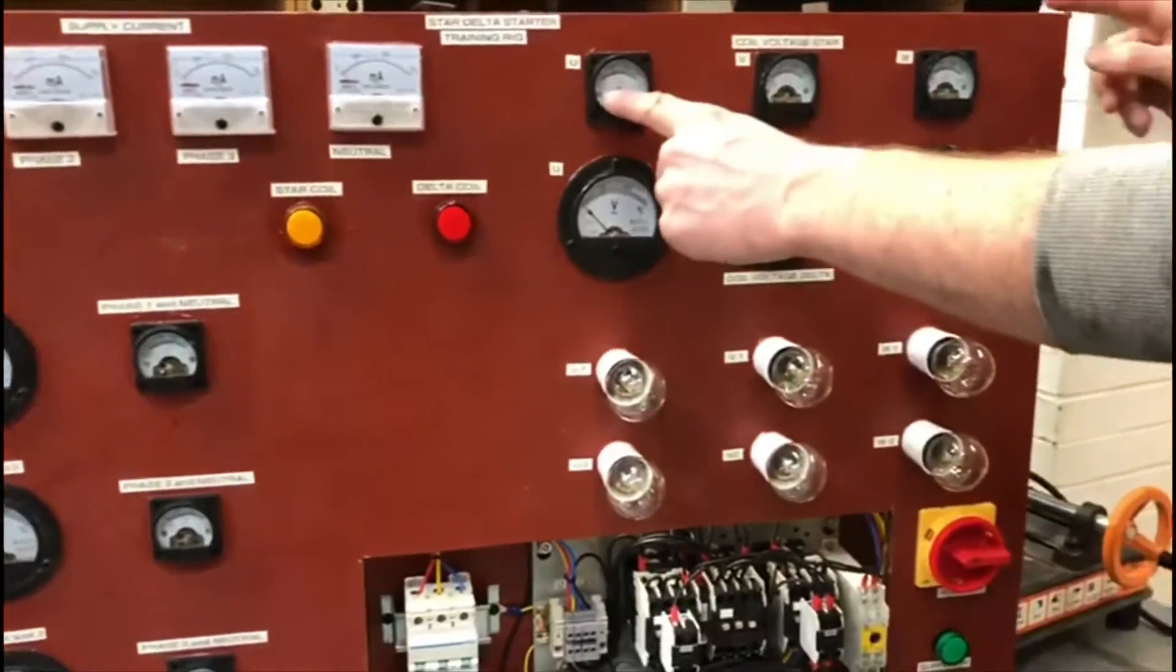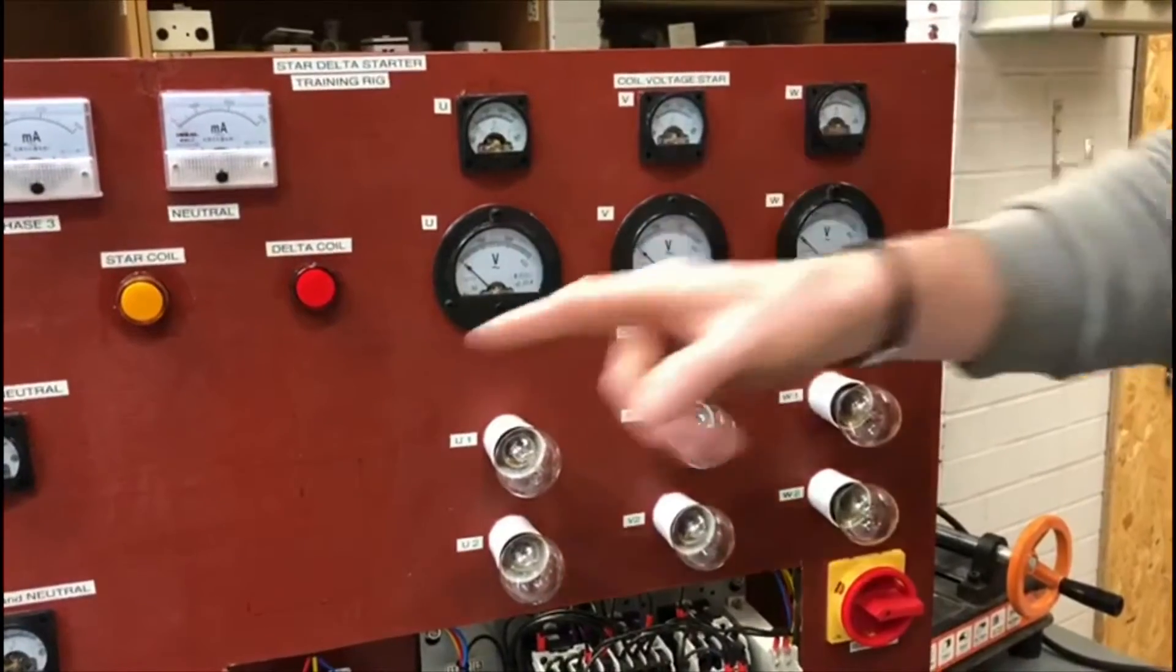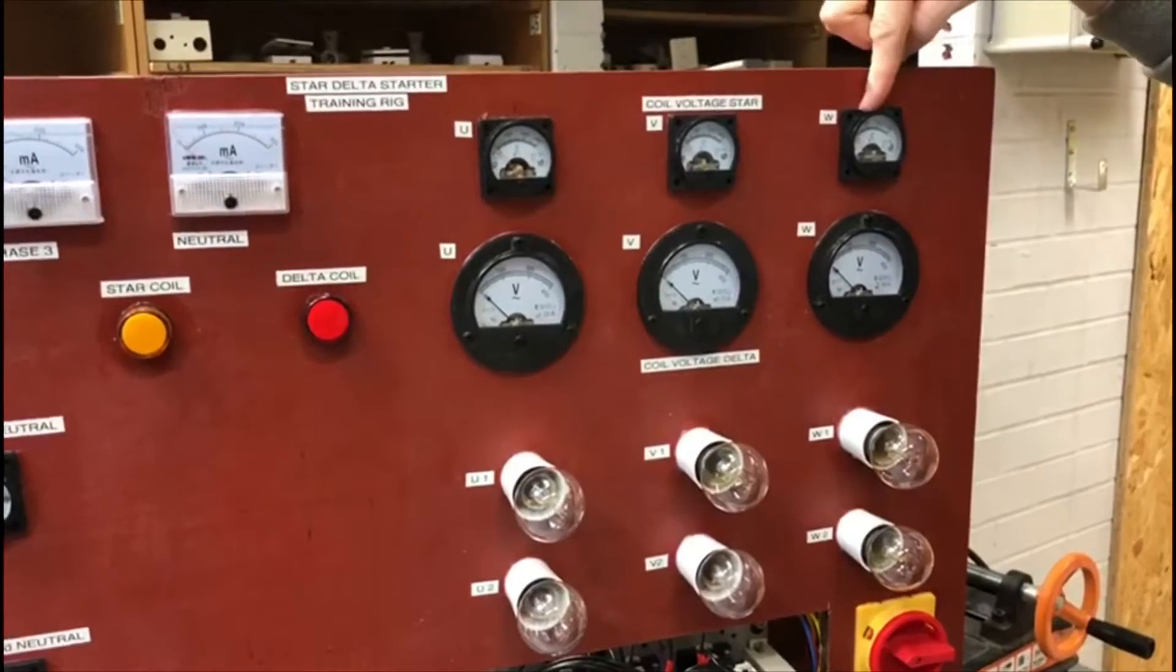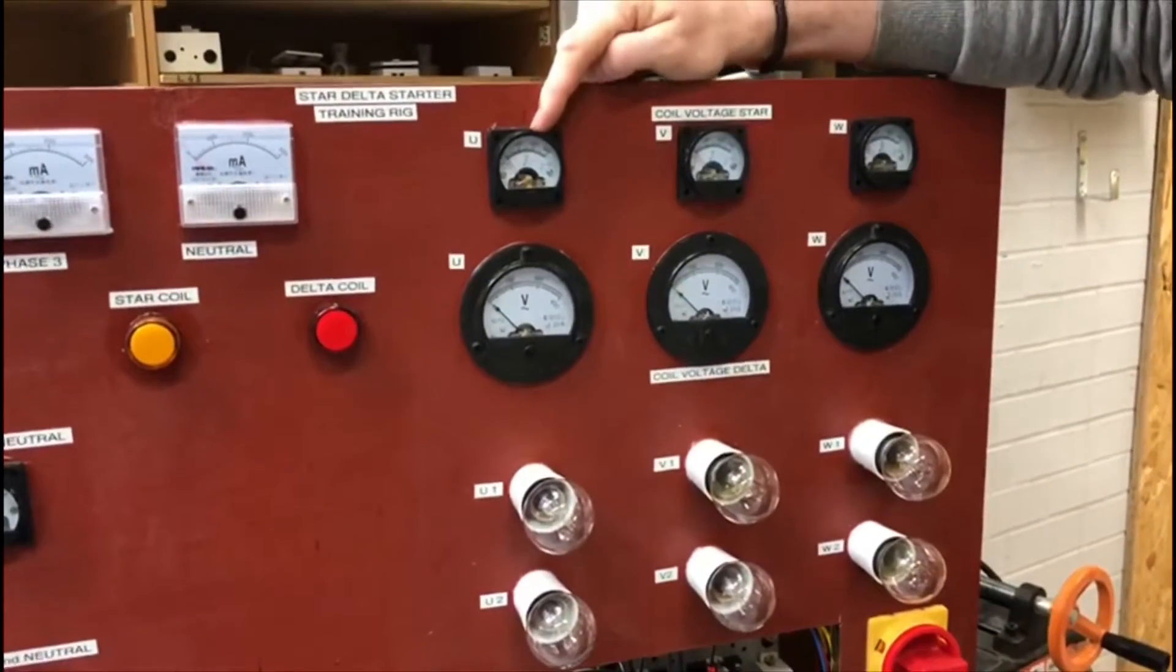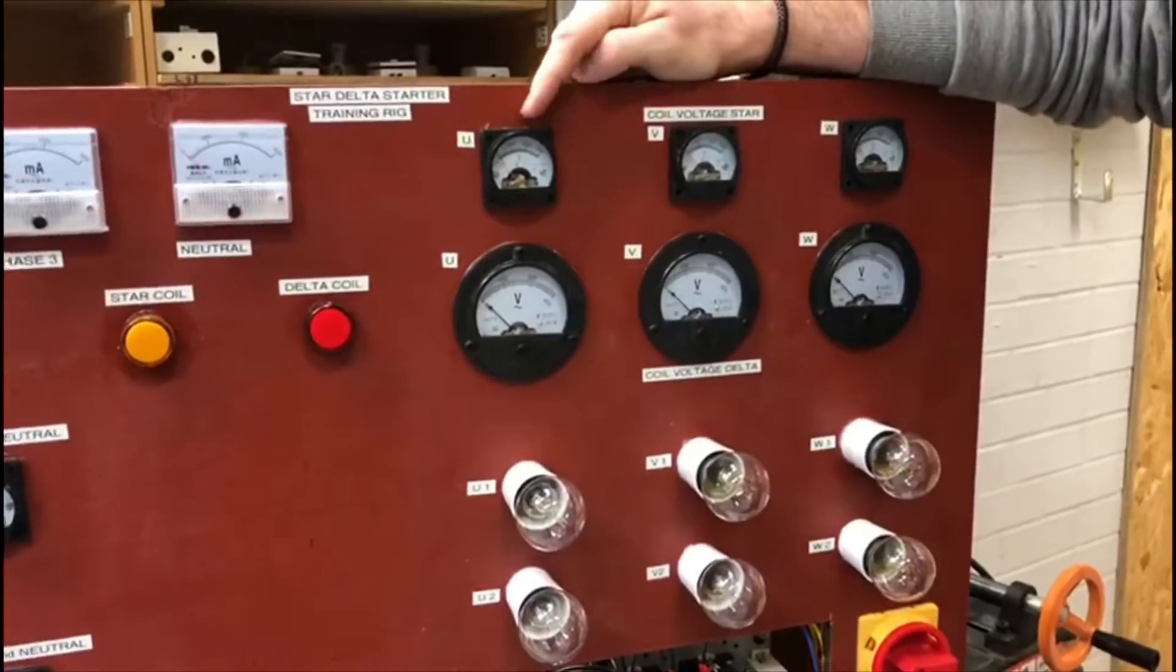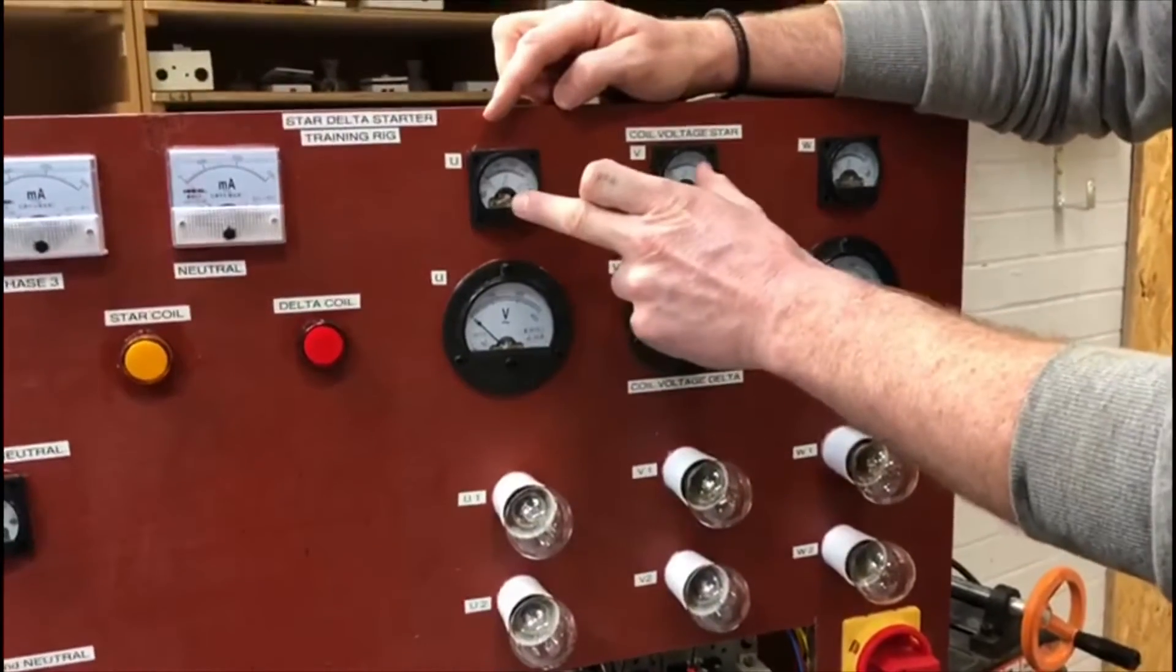If you look over here then, we have another six panel ammeters similar to the ones on the supply. This time, however, the three at the top are representing the voltages that appear over the loads, and we'll just talk about them in a second.